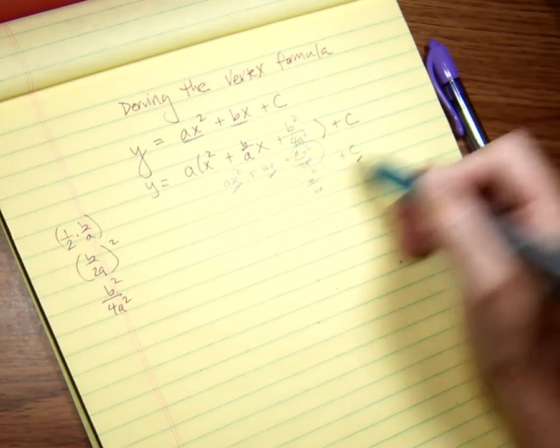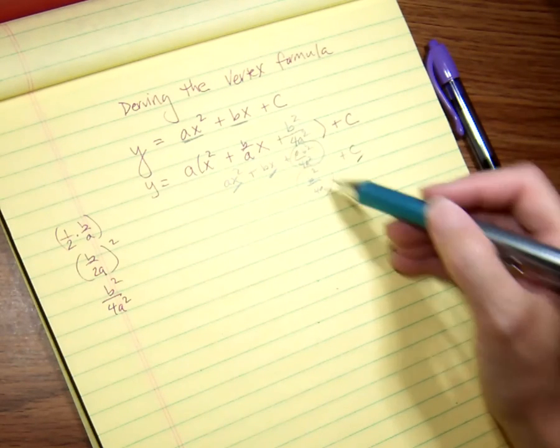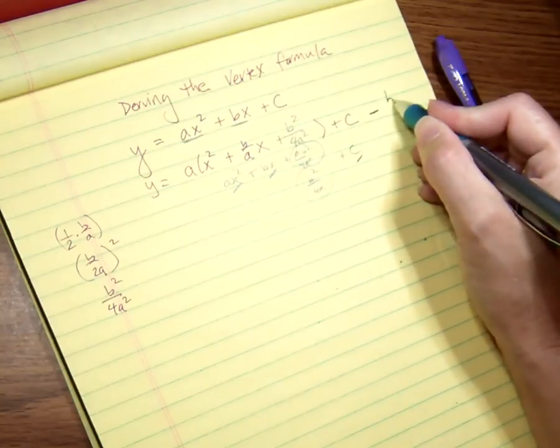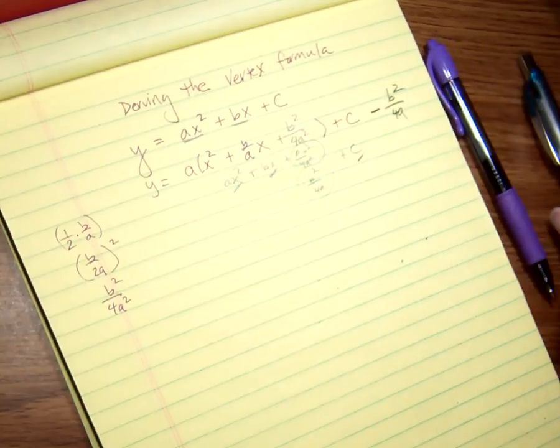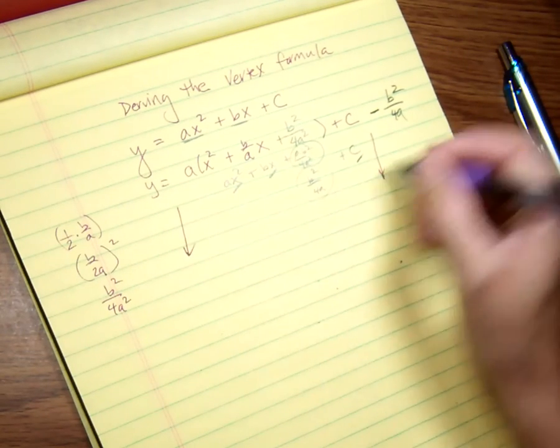So it's A times B²/4A², which reduces down to B²/4A. Then I still have my plus C. So this is old, this is old, this is old, this is the new thing right there.